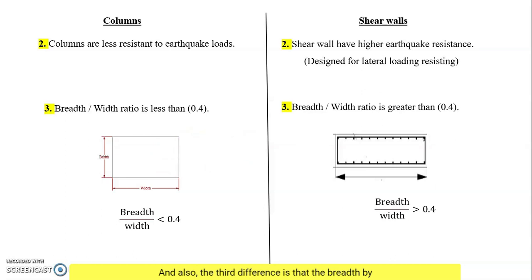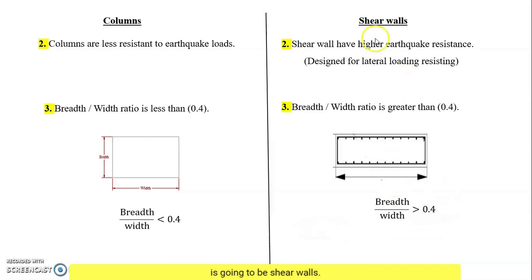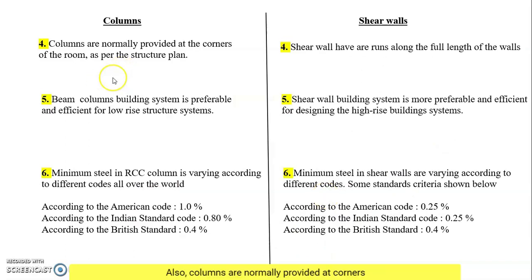The third difference is the breadth-to-width ratio. For columns, the breadth-to-width ratio will be less than 0.4. When the breadth-to-width ratio is greater than 0.4, the structural element is going to be classified as a shear wall.